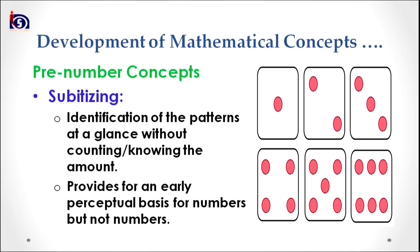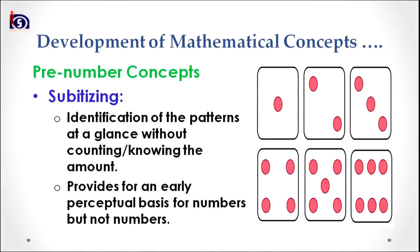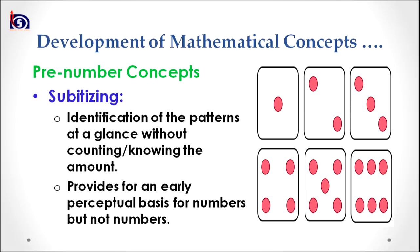The fourth sub-concept under pre-number concept is subitizing. Subitizing can be referred to as identification of a pattern at a glance without counting or knowing the exact amount. As you are aware, pre-number concepts are developed at an age where knowledge of numbers is absent; therefore, counting is not possible at this stage. As you can see in the visual, a child can easily tell which square or side of a dice has more dots on it. Subitizing also provides an early perceptual basis for numbers, but it is without numbers.